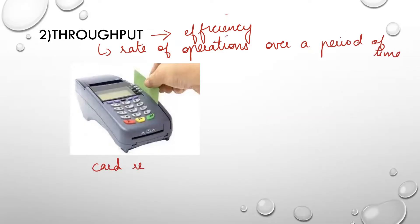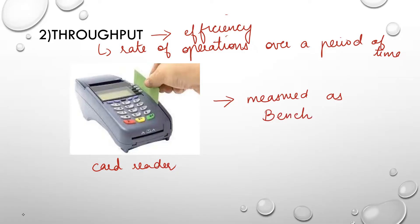Now let us take the example of a card reader. How do you define the throughput of this card reader? The throughput is the number of transactions that can happen over a period of time — for example, the number of transactions you can do in one hour is called the throughput. This is always measured as a benchmark. A benchmark is a reference point for comparing the output.